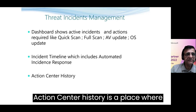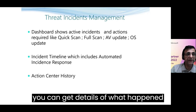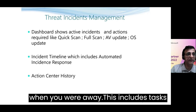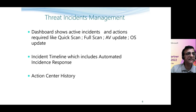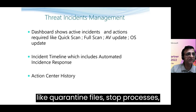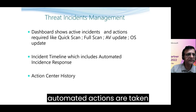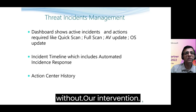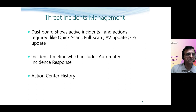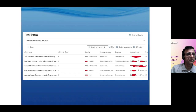Action center history is a place where you can get details of what happened while you were away. This includes tasks like quarantine files, stop processes, and remove scripts. All these automated actions are taken without our intervention.